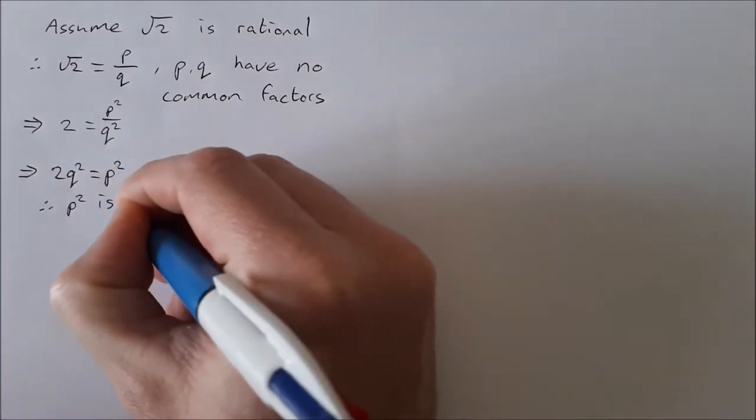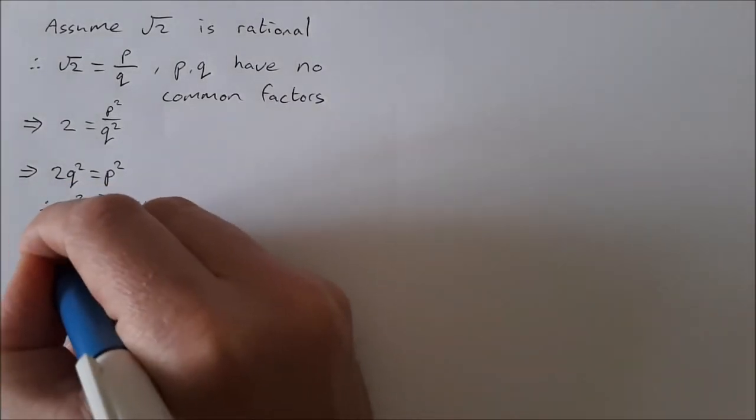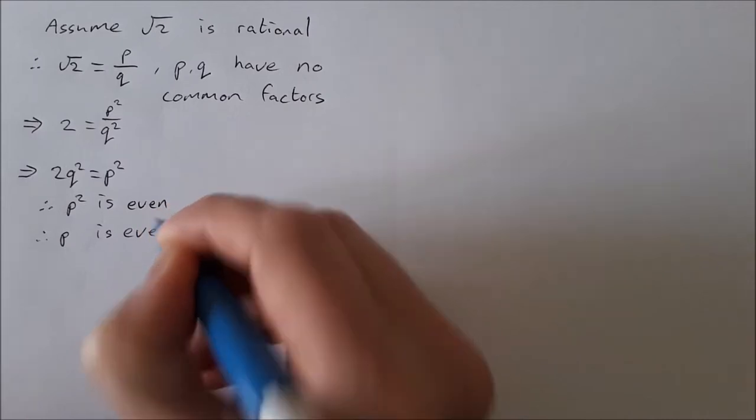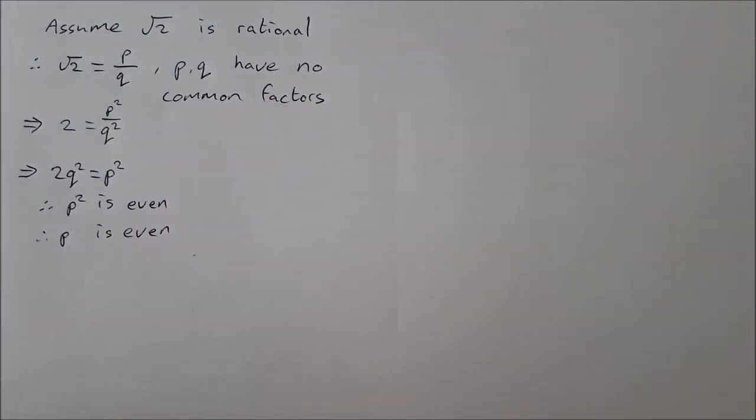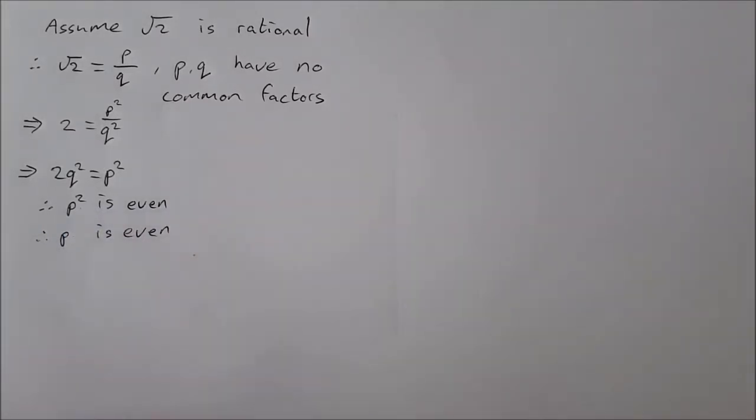So therefore p squared is even. Now if p squared is even, that means p is also even. If you think about any even square number, for example 36, the square root of that is 6, 64 the square root is 8.